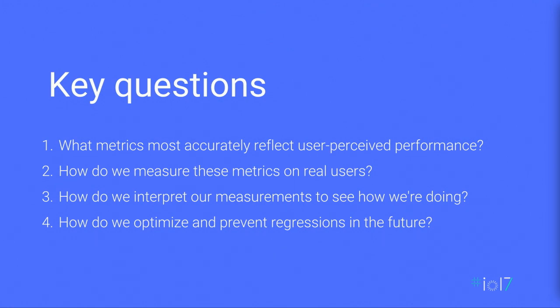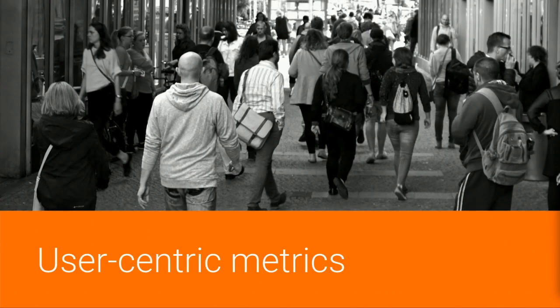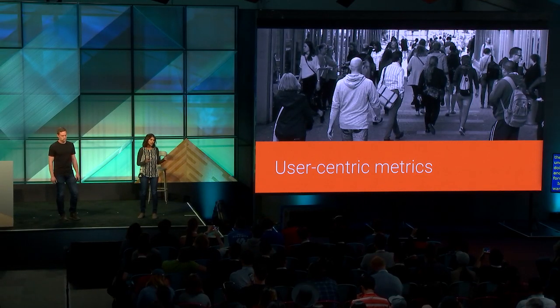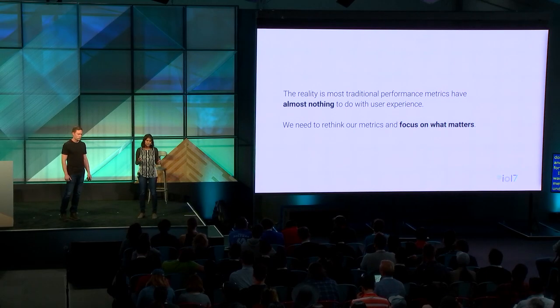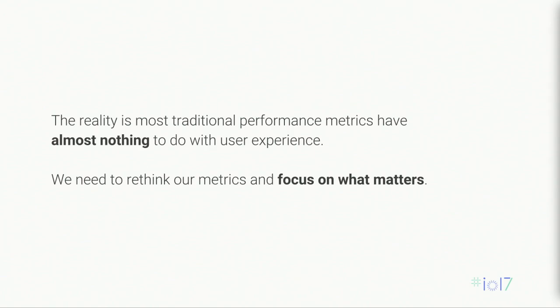These are the questions we want you to think about, and the questions we hope to answer in this talk. User-perceived performance is important — what are the metrics that accurately reflect this? How can we measure these metrics on real users? How can we interpret these measurements to understand how well our app is doing? And how can we optimize and prevent regressions going forward? In this segment of the talk, we want to talk about these new metrics and the basic concepts underlying them.